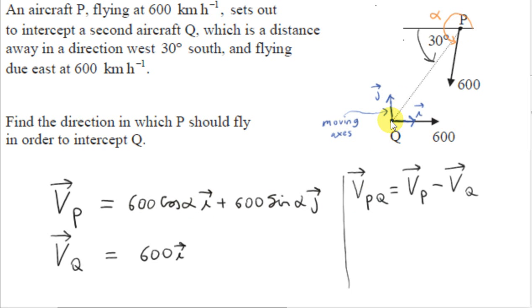We imagine a moving axis centered at Q. If P is to intercept or collide with Q, then from the point of view of Q, the direction of P's velocity must be pointing towards Q — must be pointing towards the origin of this coordinate system. So we need to find the angle alpha such that VPQ is a vector on a line that passes through the origin of this moving coordinate system. From Q's point of view, P will appear to move in the direction of VPQ at constant velocity, and eventually point P will reach point Q.